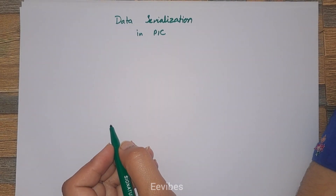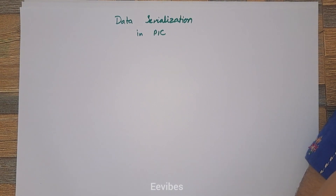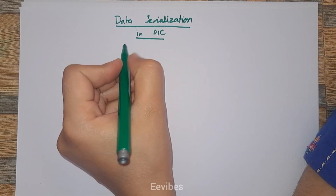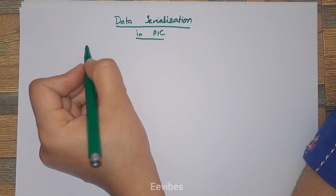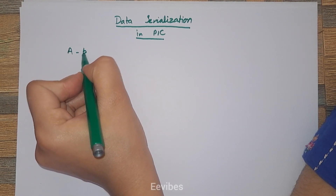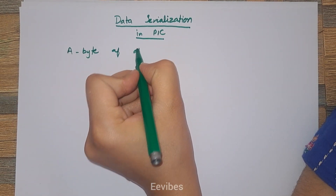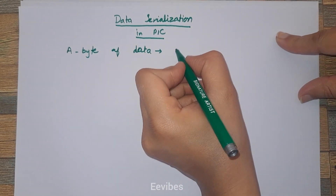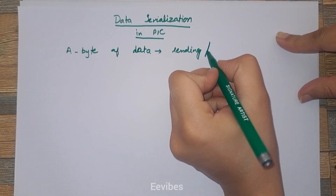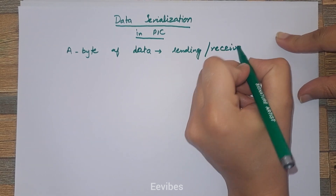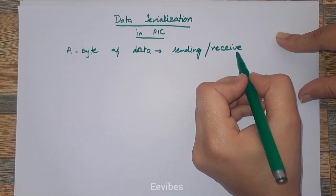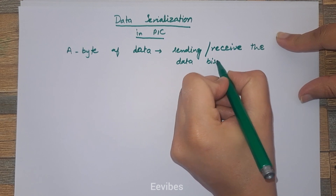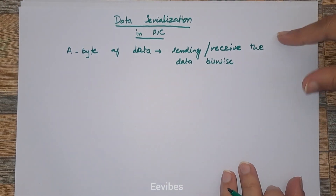Hi everyone, this is your instructor Asma Mushtaq from EE Vibes. In today's lecture I will discuss data serialization in the PIC microcontroller. Data serialization means if you have a byte of data and you want to send or receive it via a particular pin bitwise — sending and receiving data bitwise is called data serialization.